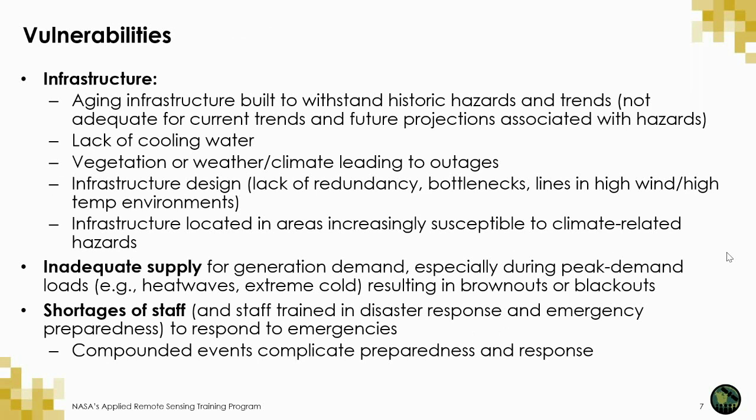Let's talk more about what some of these vulnerabilities may look like. First, infrastructure is vulnerable in several ways. Aging infrastructure may not be built to withstand current and projected hazards. Water shortages caused by drought or changing weather patterns may mean a lack of cooling water necessary for thermoelectric power plants. Power outages can occur when vegetation like trees fall on power lines or extreme weather events disrupt power supplies. A lot of energy infrastructure is located in coastal areas where it's susceptible to extreme storms, storm surge, flooding, sea level rise, or other climate-related hazards.